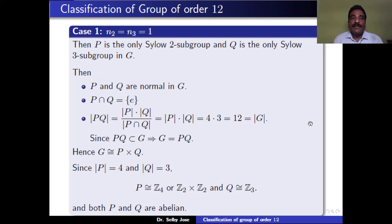We have P and Q as subgroups of G, both normal in G, intersecting trivially, and G = PQ. Therefore, G is the internal direct product of P and Q, that is, G is isomorphic to P × Q.